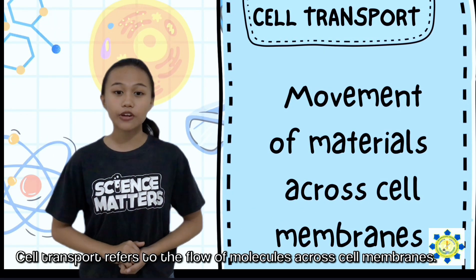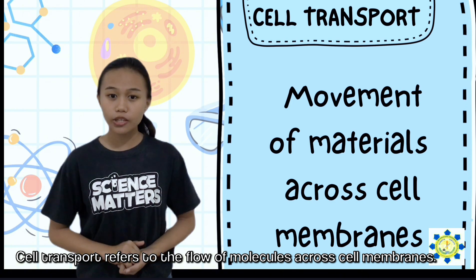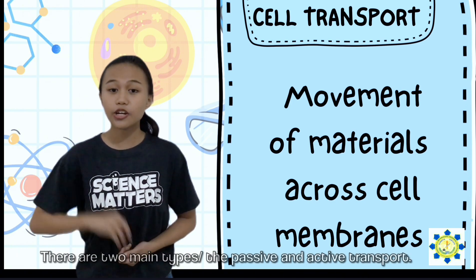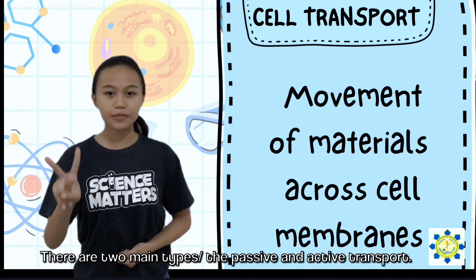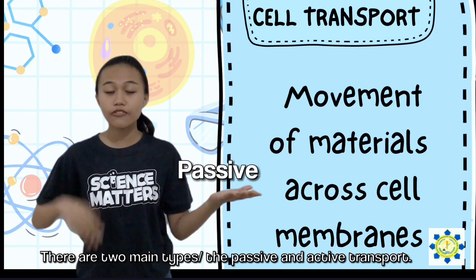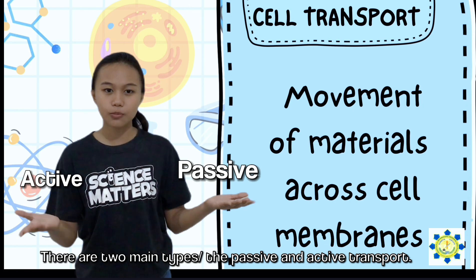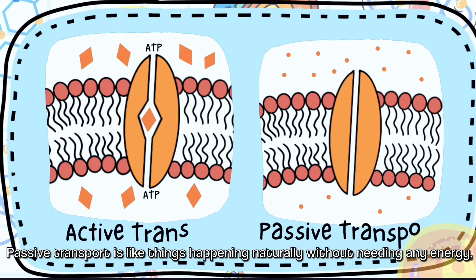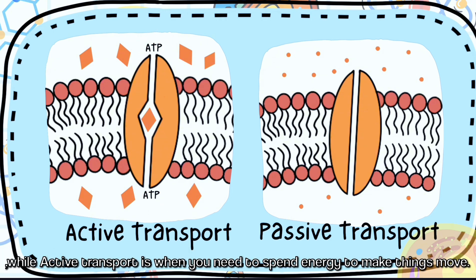Cell transport refers to the flow of molecules across cell membranes. There are two main types: the passive and active transport. Passive transport is like things happening naturally without needing any energy, while active transport is when you need to spend energy to make things move.